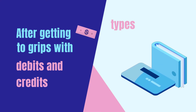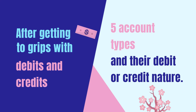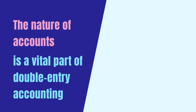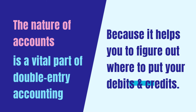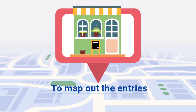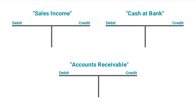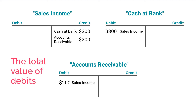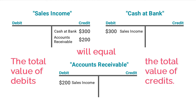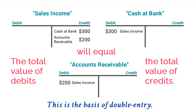After getting to grips with debits and credits, you learned about the five account types and their nature. This principle is also a vital part of double-entry accounting because it helps you figure out which entries into your set of accounts should be debits and which ones should be credits. Then, to help map out the entries you need to make for a transaction, you learned how to use T-accounts. By using T-accounts, you can really see the double-entry accounting system at work — if you enter a debit amount in one T-account, you must also enter a credit amount in another. No matter how complicated the transaction, the total value of the debits will always equal the total value of the credits. This, once again, is the basis of double-entry accounting.